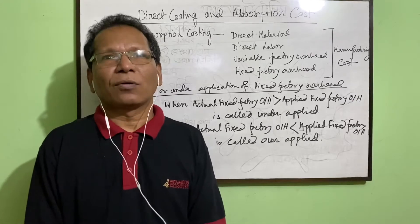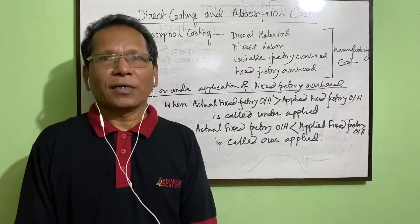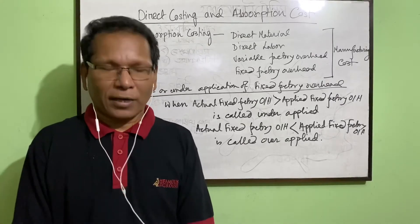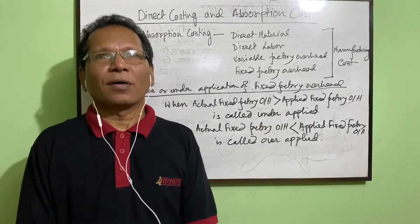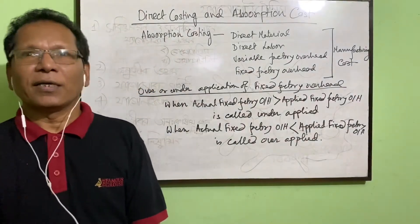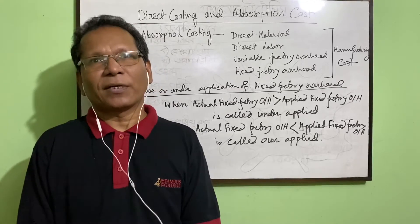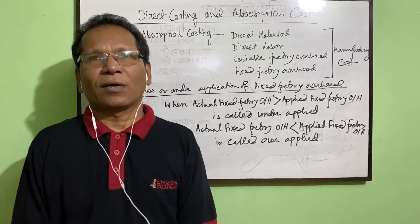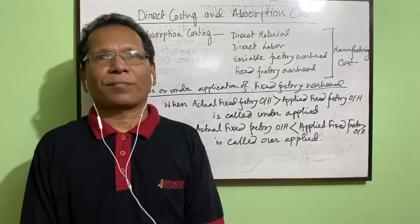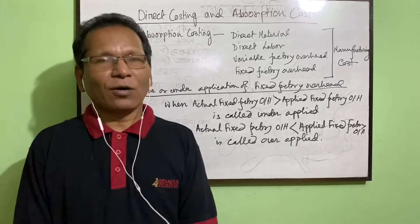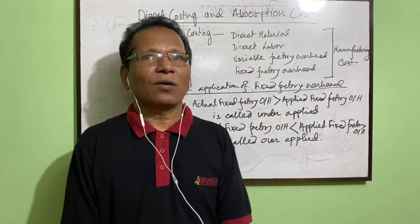First, we try to know what is fixed factory overhead under applied or over applied. Absorption costing is a method of valuation of stock where direct material, direct labour, variable manufacturing overhead — that means all variable manufacturing cost and fixed cost — are included in manufacturing cost. If there is a variance between applied fixed overhead and budgeted fixed factory overhead, only then the question arises whether fixed factory overhead is under applied or over applied. When a standard rate of fixed factory overhead is used to calculate unit cost of product, it is called fixed factory overhead applied.